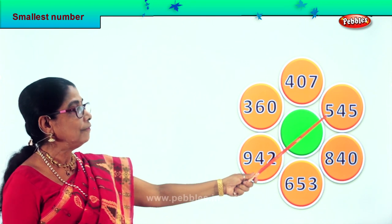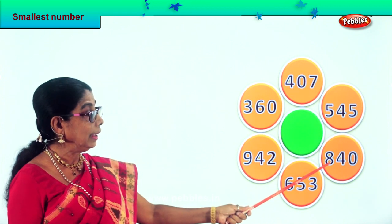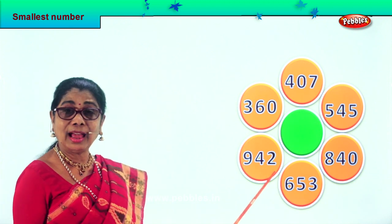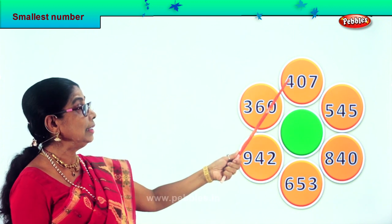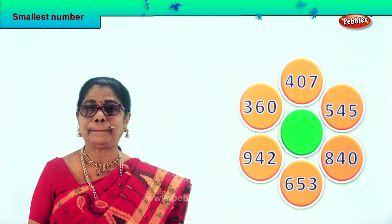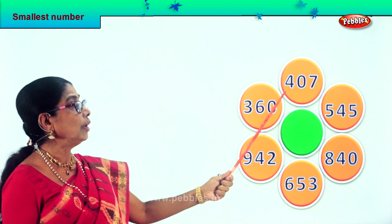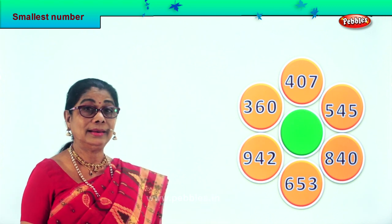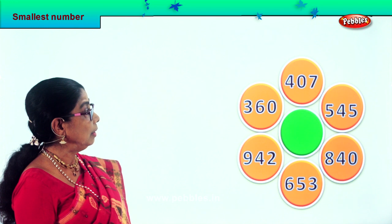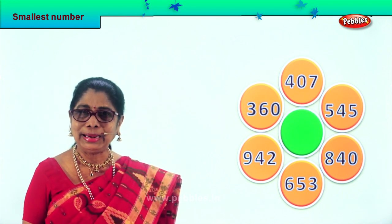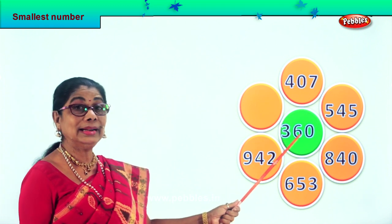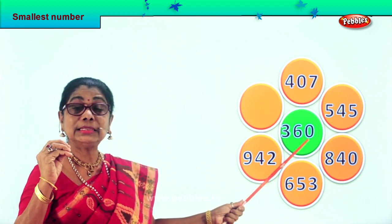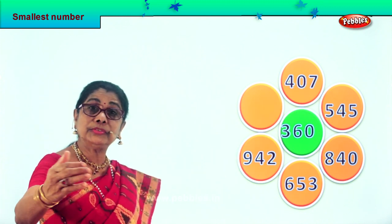Let's take another sum. Let's read aloud: five hundred forty-five, eight hundred forty, six hundred fifty-three, nine hundred forty-two, three hundred sixty, and four hundred seventy. In hundreds we have four hundred, five hundred, eight hundred, six hundred, nine hundred, then three hundred. Which is the smallest — three hundred or four hundred? Definitely three hundred. So among the six numbers, three hundred sixty is the smallest, and we take and put it in the middle.